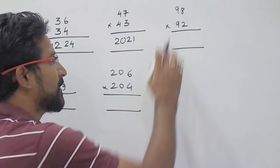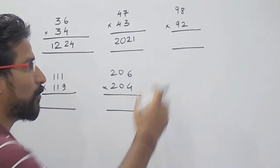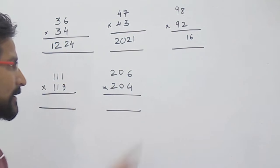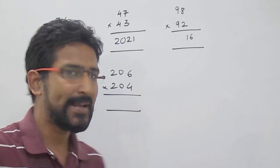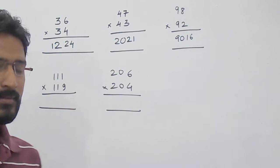Now we see the next example. Here, 98 and 92. 8 plus 2, that is 10. So now what you have to do? 8 into 2, that is 16. The 10s place is 9. The next number is 10. So 10 into 9, that is 90. So your answer will be 9, 0, 1, 6.